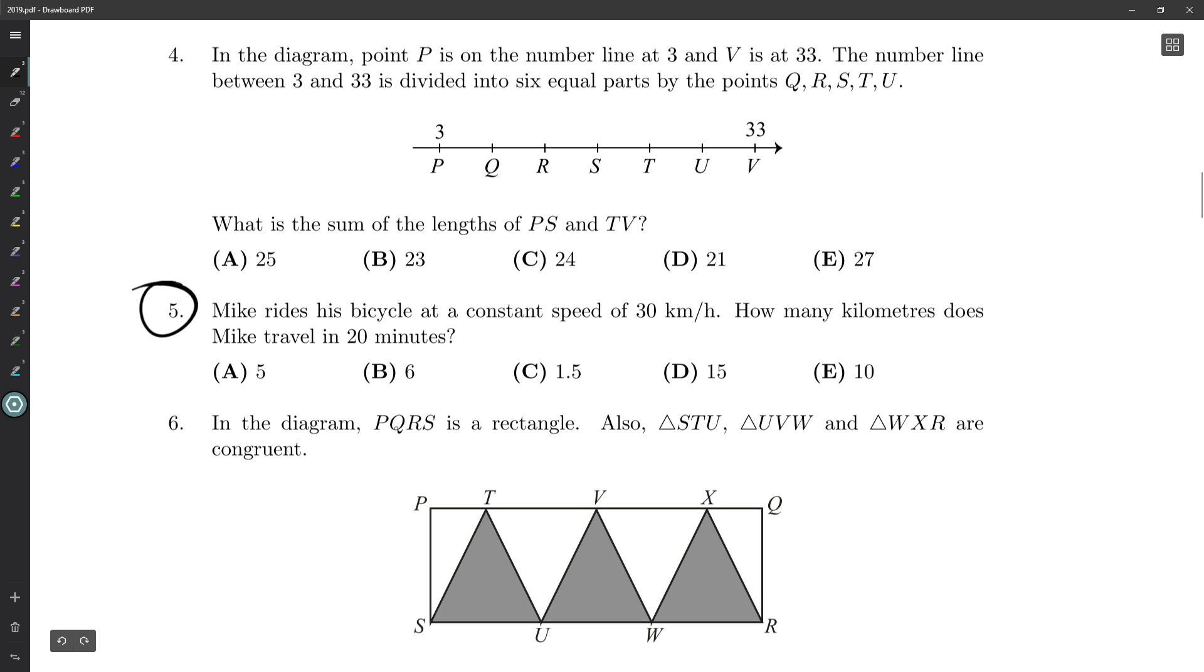Mike rides his bicycle at a constant speed of 30 kilometers per hour. How many kilometers does Mike travel in 20 minutes? I noticed it's minutes there, but hours here.